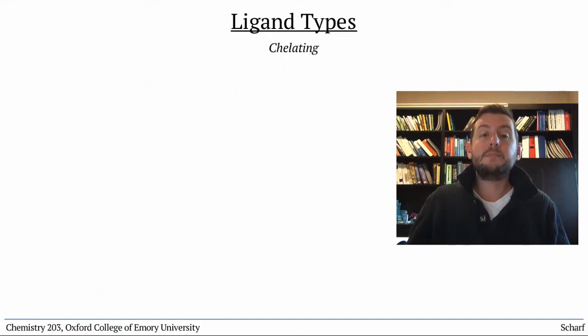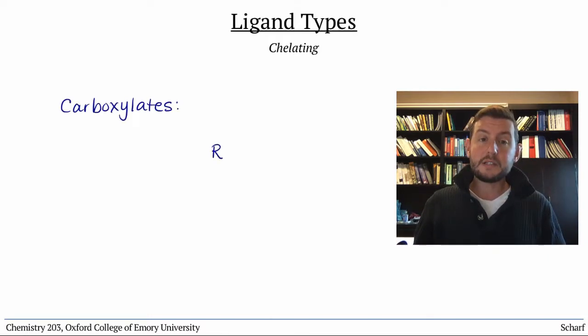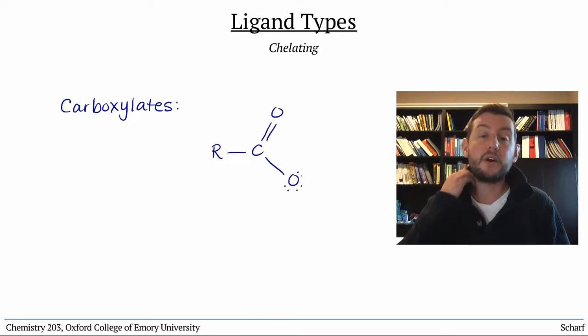Many ligands can bind to metals using multiple pairs of electrons. Carboxylates, for instance, can bind using a lone pair on the O- and a lone pair on the neutral oxygen atom.